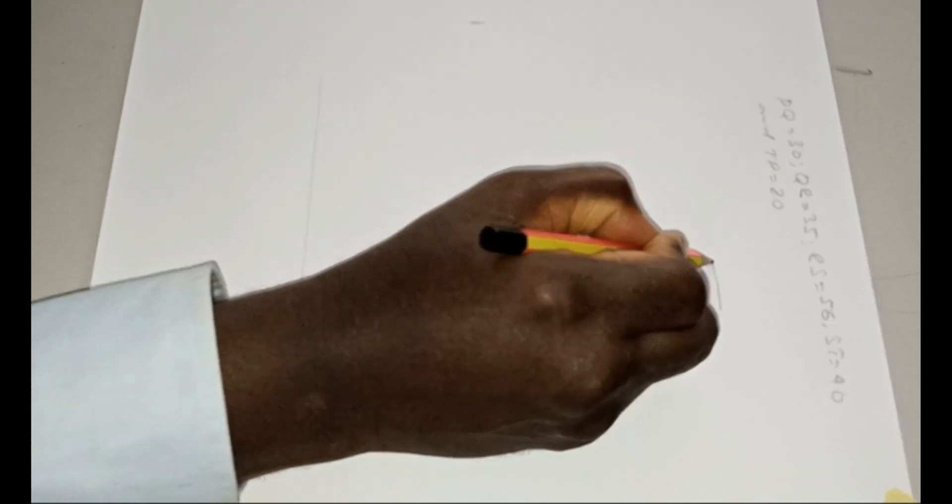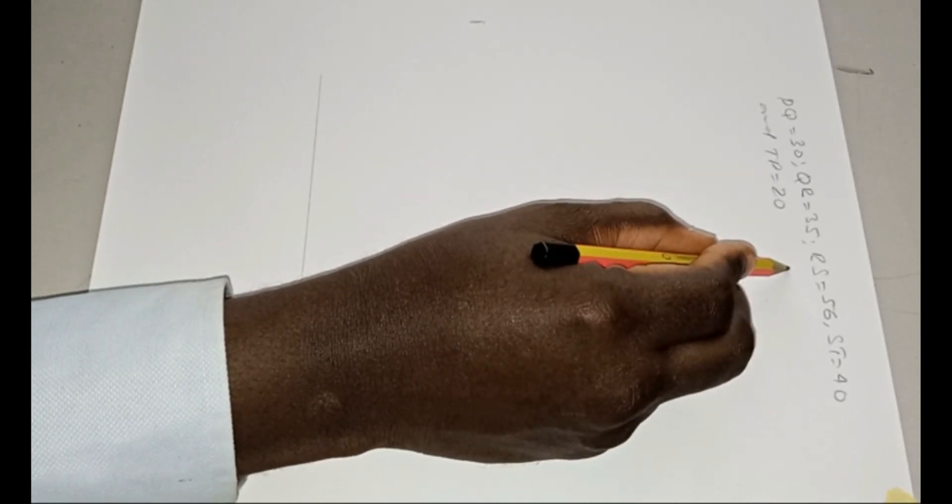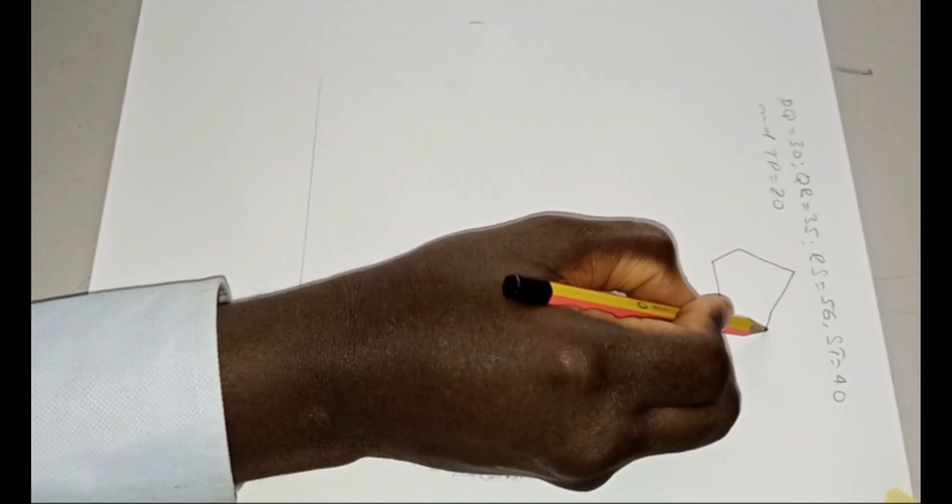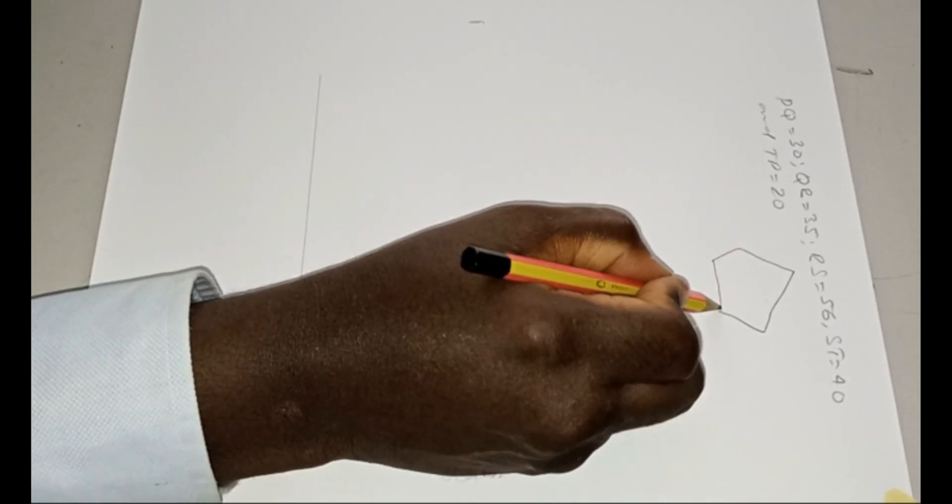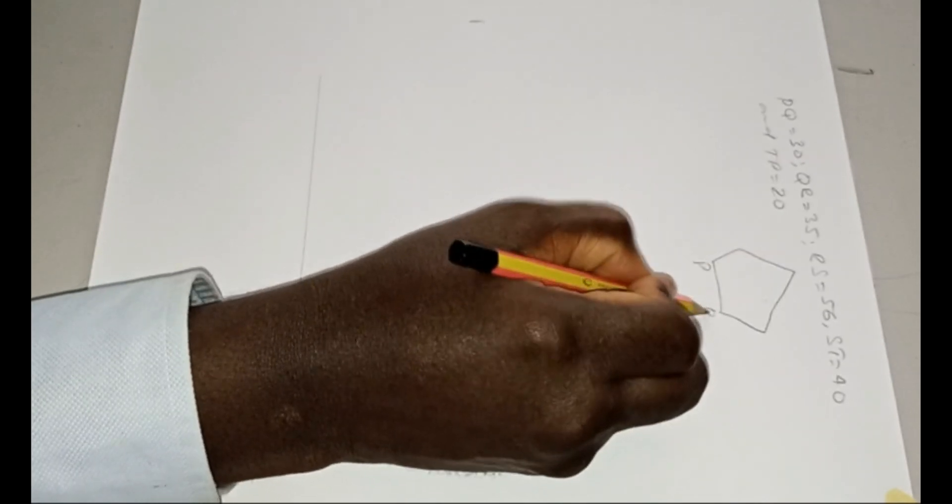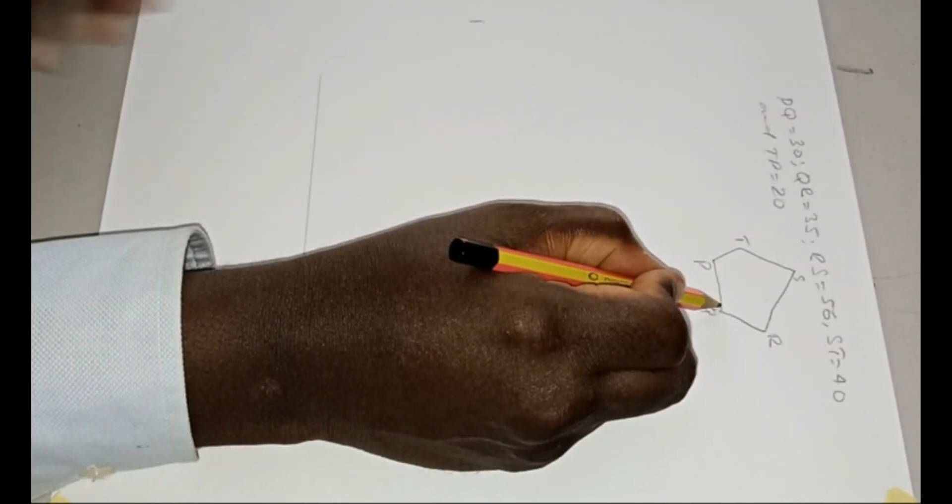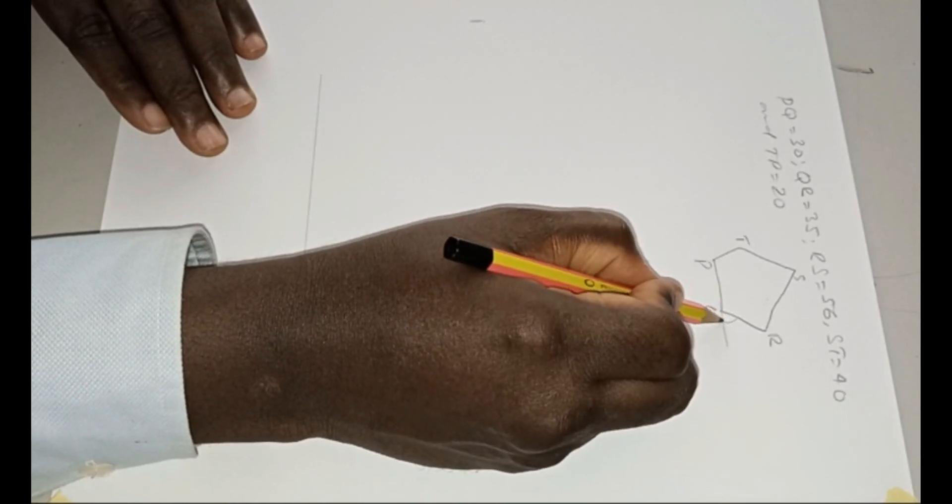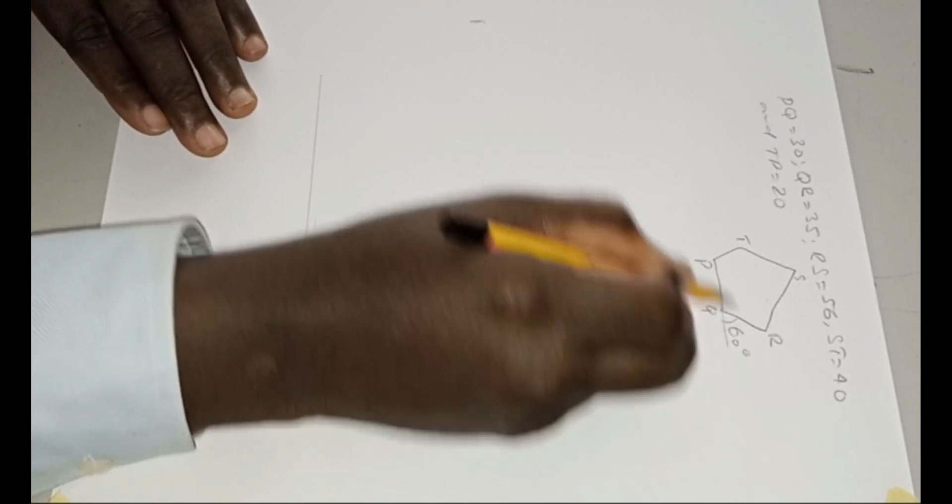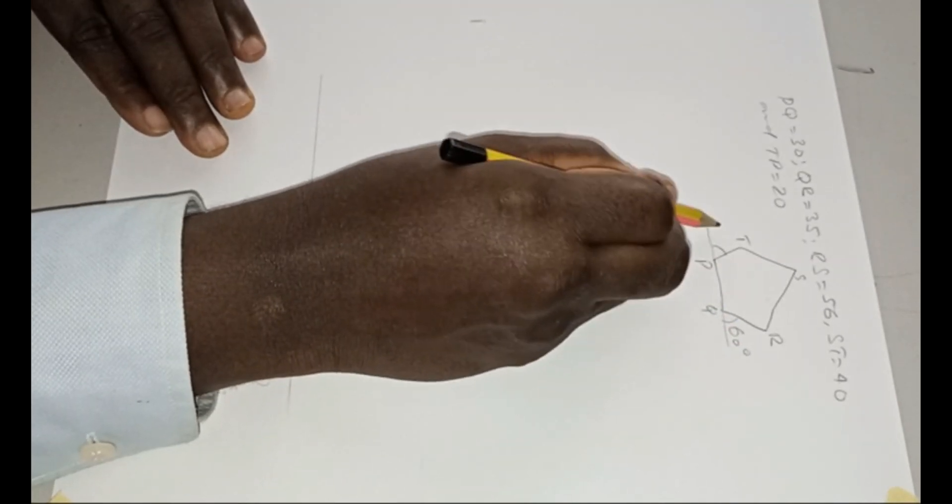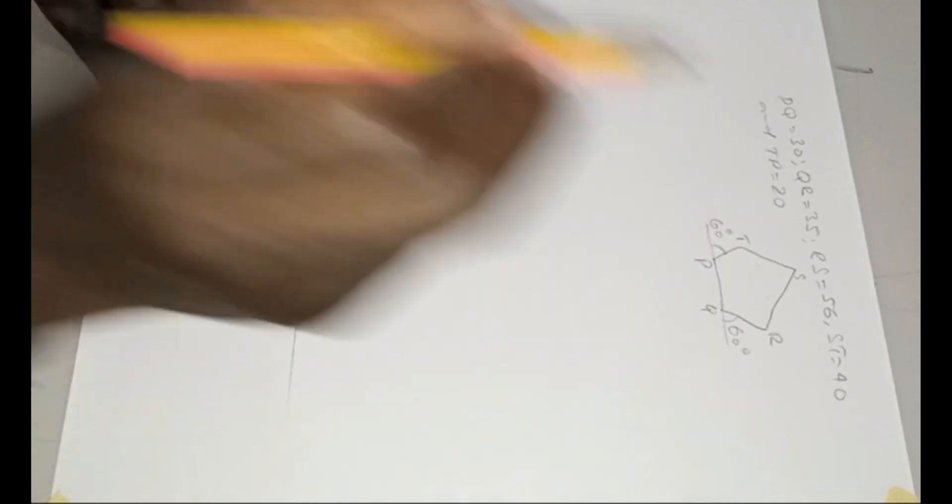It goes like this. This, here, and here. This is PQRST. So the external angle here is 60 degrees and external angle here is 60 degrees.